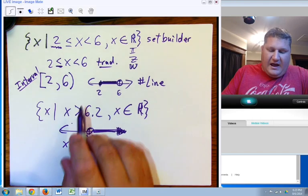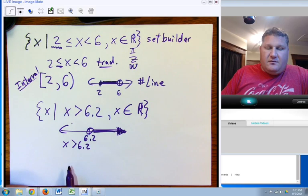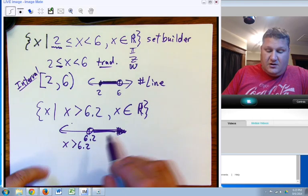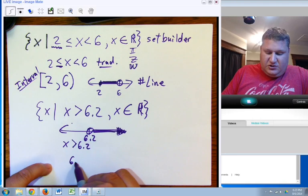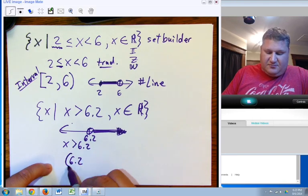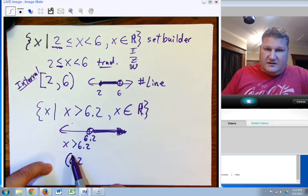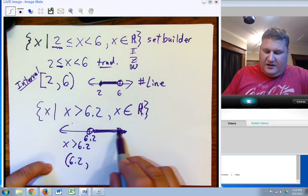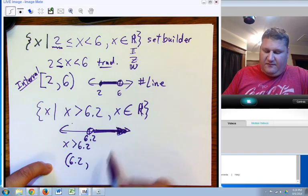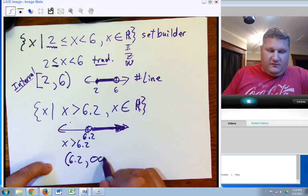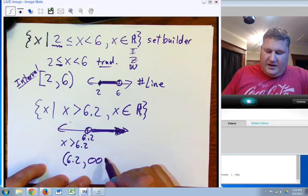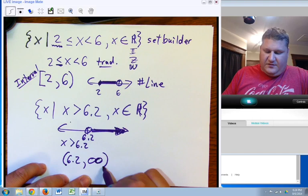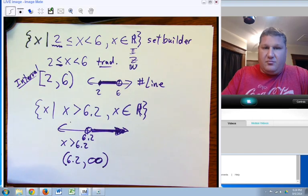But how would you put it in interval notation? Well, that's going to require us to use the 6.2 where everything starts. And, of course, it's a parenthesis because it's not included. Comma. Well, how far does it go? Well, it's going to go on forever and ever and ever. So, we're going to use infinity. And any time you use infinity, you have to use a parenthesis because you cannot get into infinity. So, it cannot be enclosed.